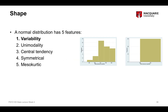A normal distribution has five specific features. The first is variability — all observations can't have the same score; there has to be a range or spread of scores. For example, a histogram of blood pressure ranging from 90 to 130 shows variance, whereas a graph where everyone has the same blood pressure of 100 does not. You have to have variability in order to have a normal distribution.